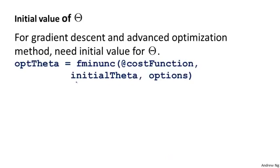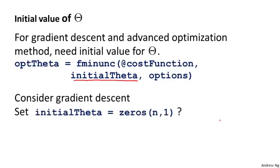For the advanced optimization algorithms, it assumes that you will pass it some initial value for the parameters theta. For gradient descent, we also need to initialize theta to something, and then we can slowly take steps to go downhill using gradient descent to minimize the function J of theta. So what can we set the initial value of theta to? Is it possible to set it to the vector of all zeros? Whereas this worked okay when we were using logistic regression, initializing all of your parameters to zero actually does not work when you're training a neural network.